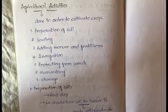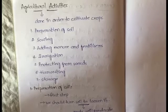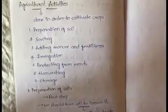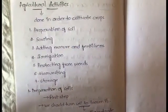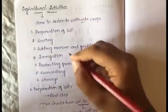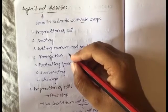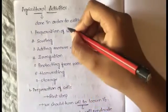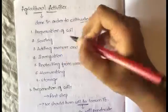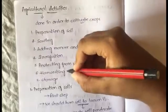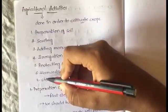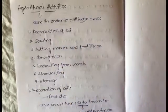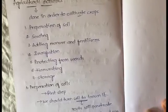Hello everyone. In the previous video we have seen introduction to crop production and management, also about types of crops. In today's video let us understand what are agricultural activities and learn about the first one, that is preparation of soil. Agricultural activities are done in order to cultivate crops. You have to follow some procedure, and there are seven steps: preparation of soil, sowing, adding manure and fertilizers, irrigation, protecting from weeds, harvesting, and storage.